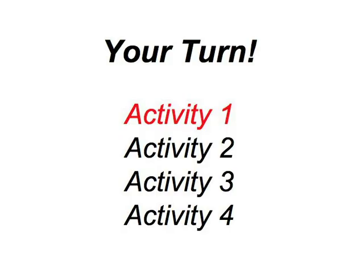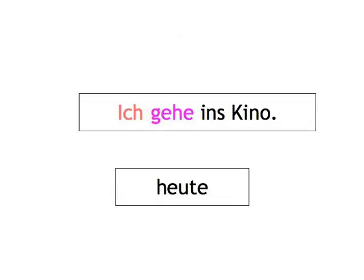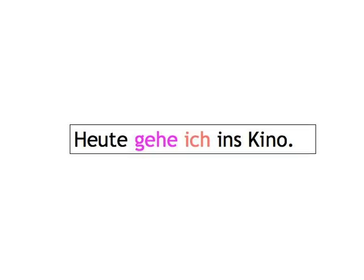This first activity is about putting some information like 'heute' or 'nächste Woche' at the beginning of the sentence. So when we give you the sentence 'Ich gehe ins Kino' and the word 'heute', you'll start the sentence with 'heute' and say 'Heute gehe ich ins Kino', with the verb staying in the second element position. Let's start then.